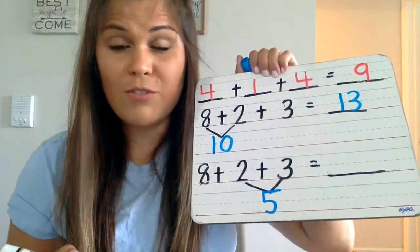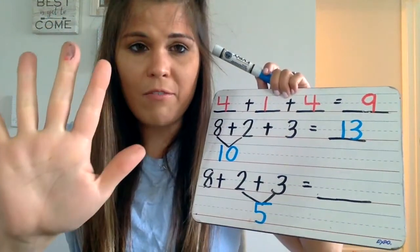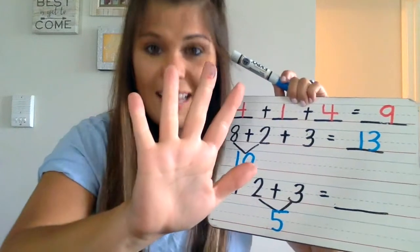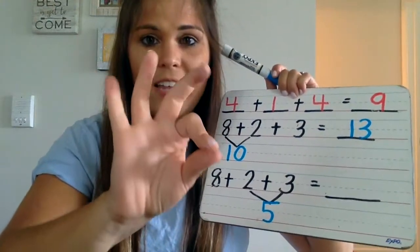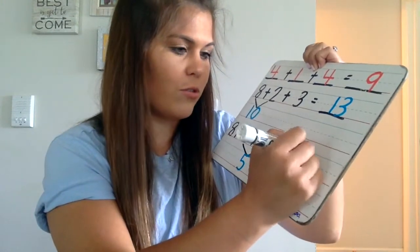I know two plus three equals five, so now I just have to do eight plus five. I'm going to solve by putting eight in my brain, five on my fingers. I'm going to say eight, nine, ten, eleven, twelve, thirteen. Eight plus five equals thirteen.